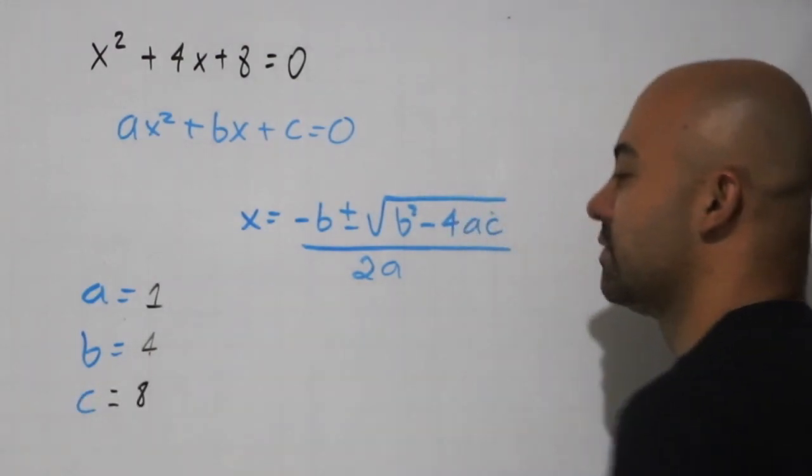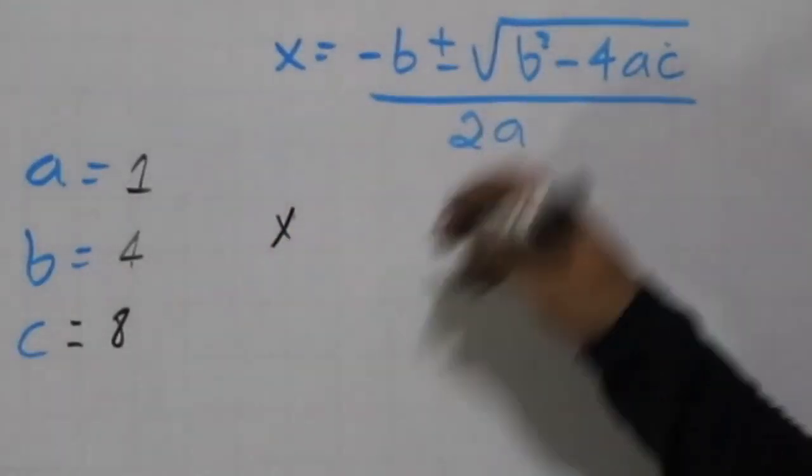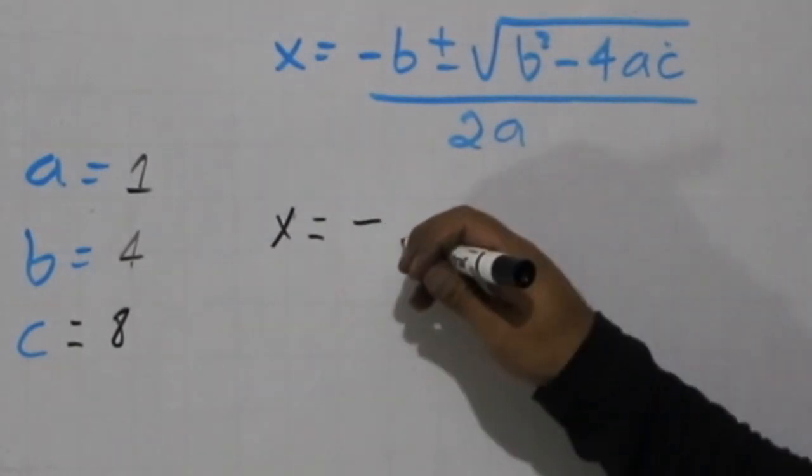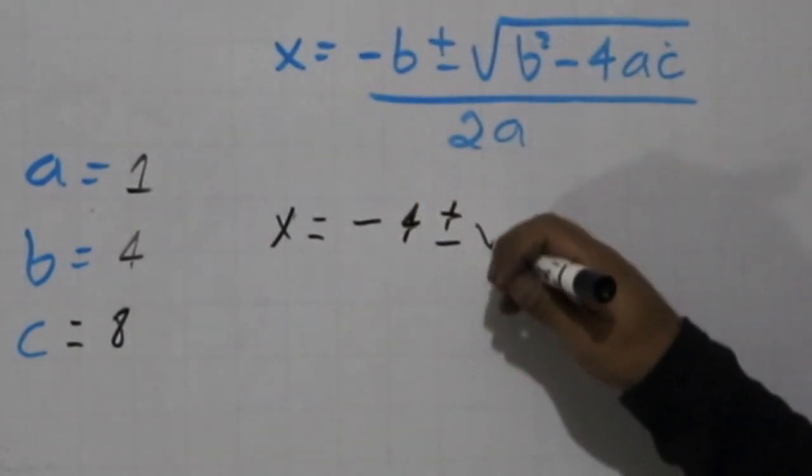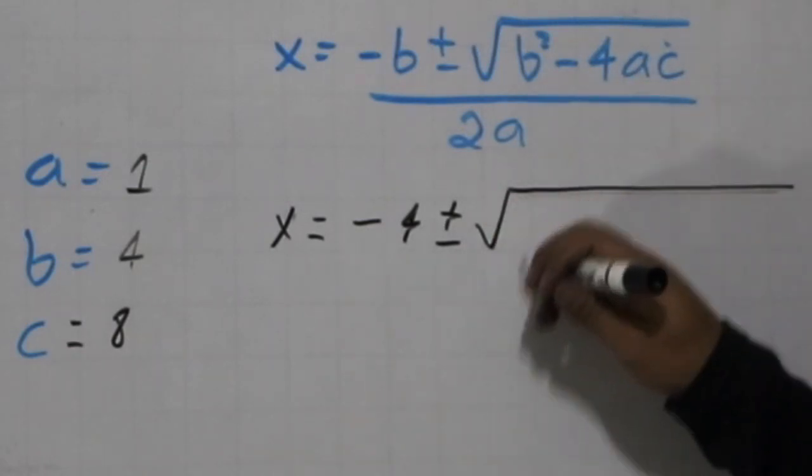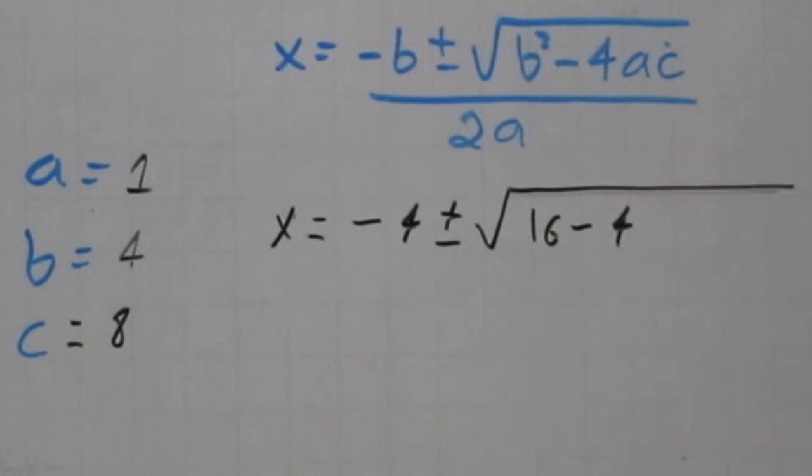And look at this, we have three positive numbers. So we're going to replace the letters in this equation by these numbers, and we have -b, that's -4, plus or minus square root of b², that's going to be 4², which is 16.